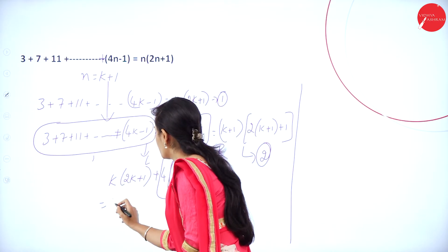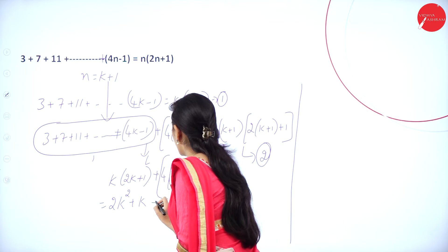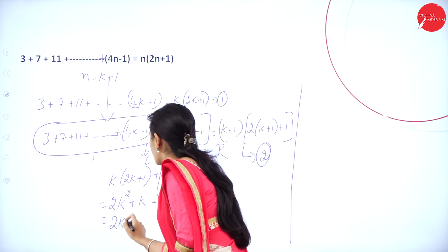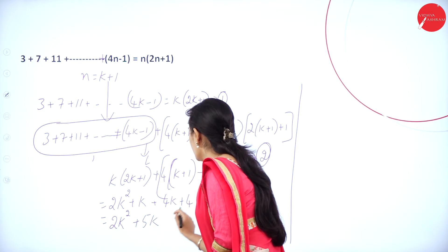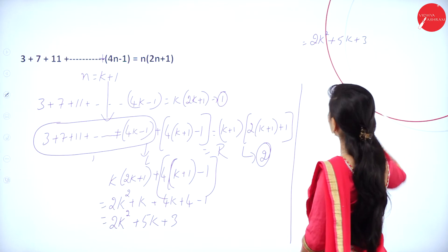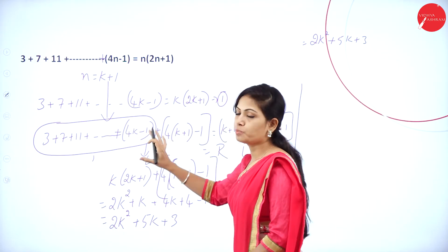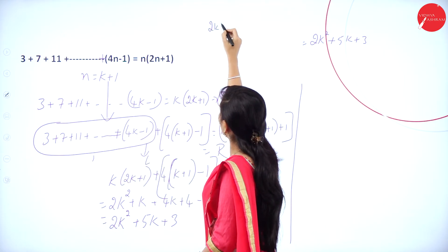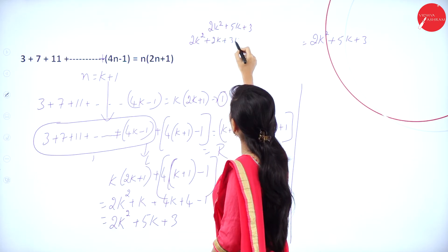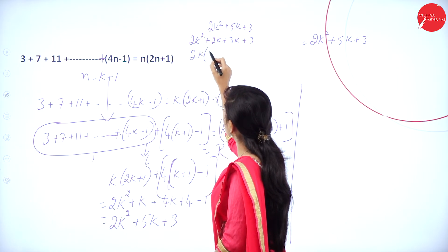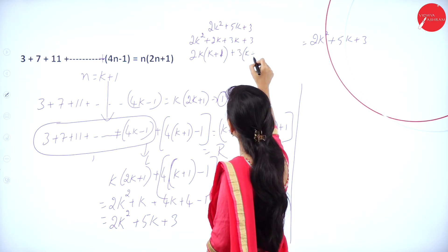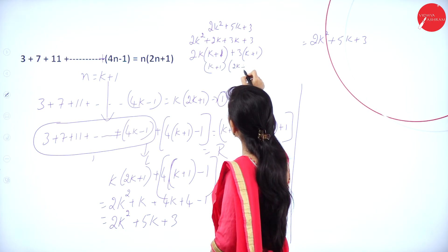Now multiply these terms: k into 2k is 2k squared plus k, and expanding 4 into (k plus 1) minus 1 gives 4k plus 4 minus 1, so 4k plus 3. Combining: 2k squared plus k plus 4k plus 3 equals 2k squared plus 5k plus 3. Now factorize: 2k squared plus 5k plus 3 equals 2k squared plus 2k plus 3k plus 3, so 2k is common giving (k plus 1), and 3 is common giving (k plus 1). Therefore it factors to (k plus 1) into (2k plus 3).